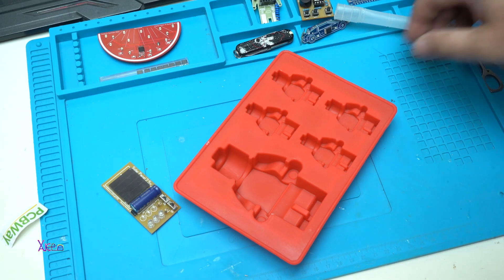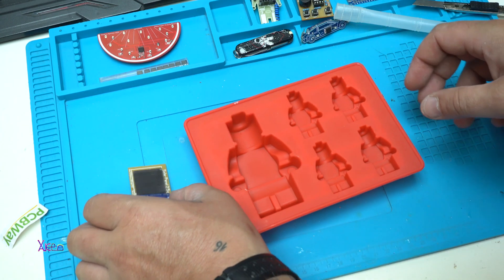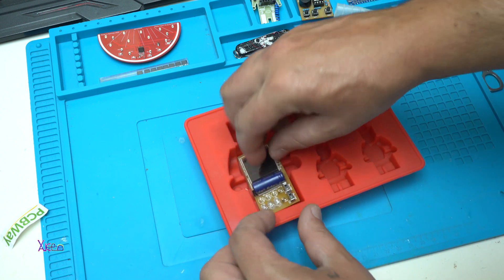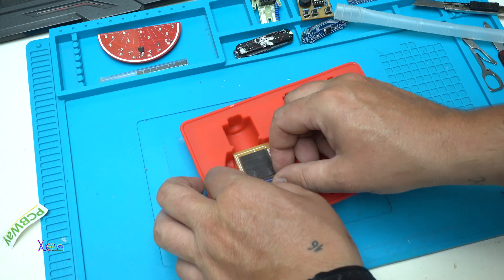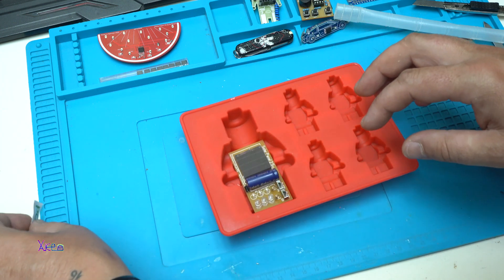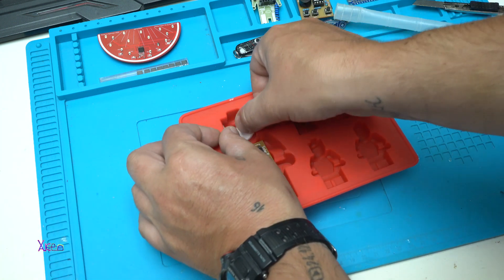By the way in next couple of seconds you will see how I pour epoxy resin in Lego mold and put one of these boards inside epoxy and we gonna see what will happen.